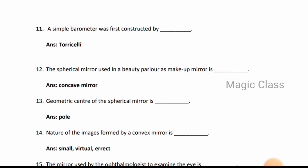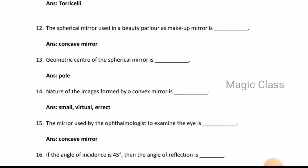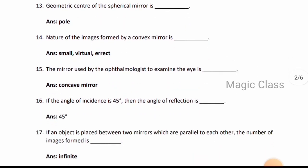Question 14: Nature of the images formed by the convex mirror is small, virtual, and erect. Question 15: The mirror used by the ophthalmologist to examine the eye is concave mirror. Question 16: If the angle of incidence is 45 degrees, then the angle of reflection is 45 degrees.